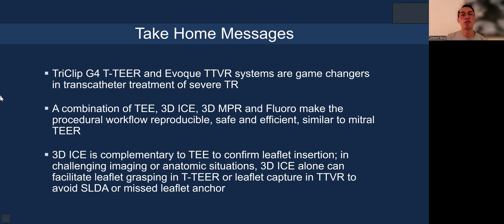In summary, the TriClip G4 T-tier system and the EVOQUE TTVR system are game changers in transcatheter treatment of severe TR. A combination of TEE, 3D ICE, 3D MPR, and fluoroscopy makes the procedure workflow reproducible, safe, and efficient — very similar to the mitral T-tier system and procedure. 3D ICE complements TEE to confirm leaflet insertion in challenging imaging situations, and 3D ICE alone can facilitate leaflet grasping in T-tier and leaflet capture in TTVR to avoid single leaflet device attachment (SLDA) or missed leaflet anchor, providing an additional safety net.